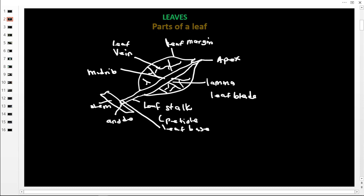The leaf base attaches the leaf onto the stem, and that point of attachment on the stem is called the node. Between the stem and the leaf stalk we have a bud called the axillary bud. The angle between a stem and a leaf on the stem is called the axil.